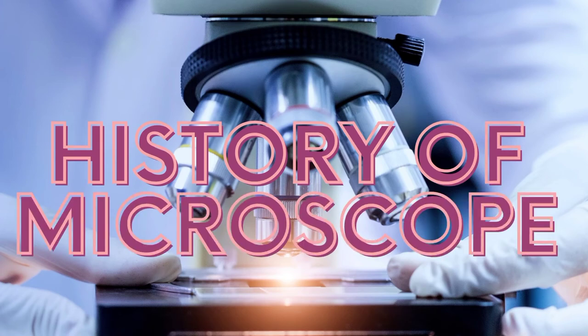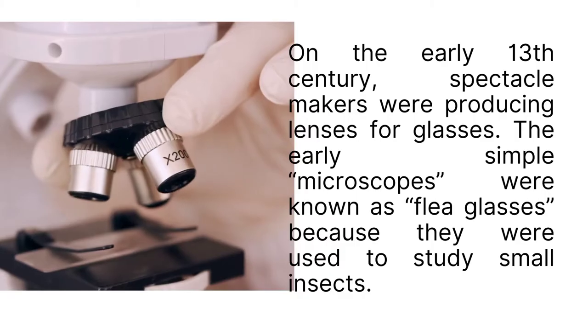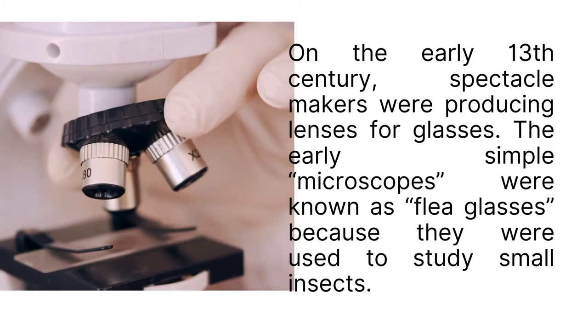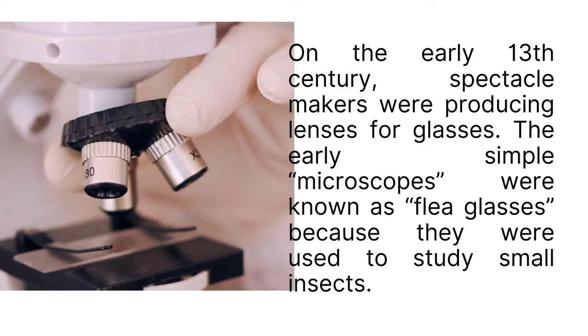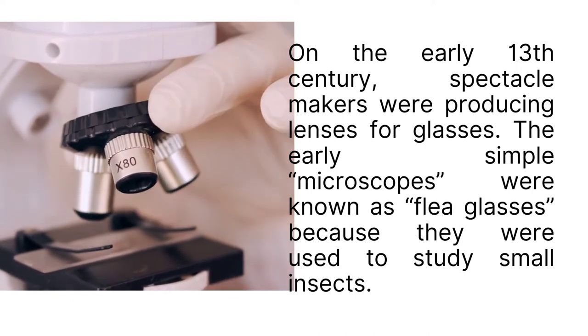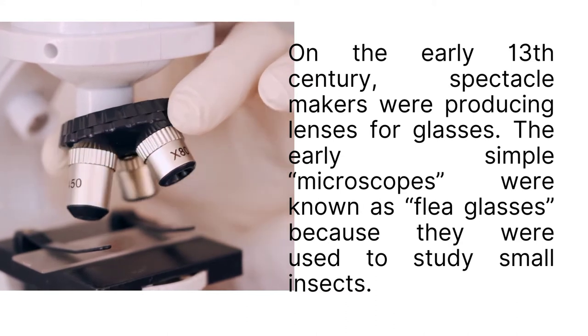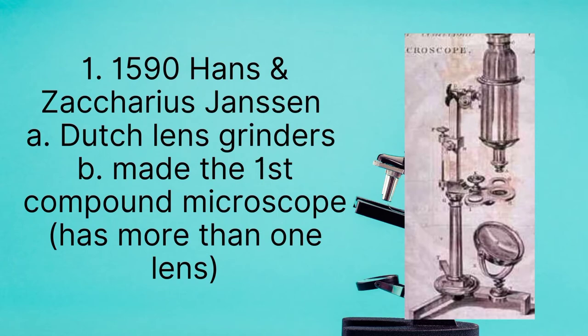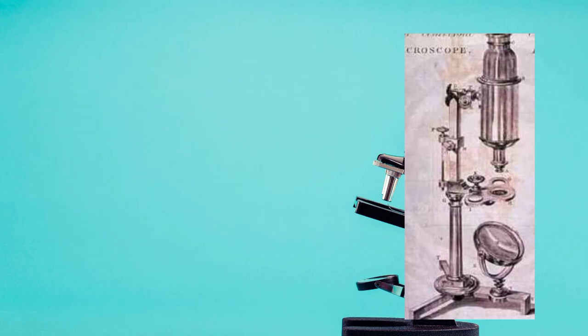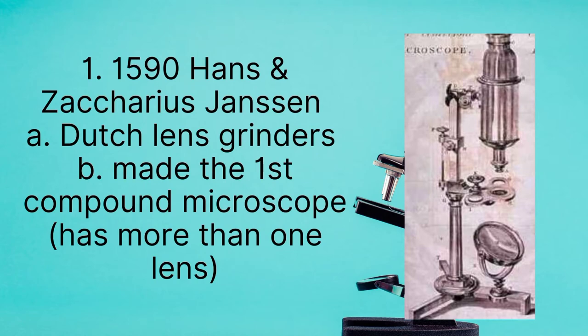In the 13th century, spectacle makers who made lenses for glasses created a microscope called flea glasses, which they used to study small insects. From the creative thinking of father and son Zacharias Jansen and Hans, they built the very first microscope in the 1590s. It was composed of more than one lens.